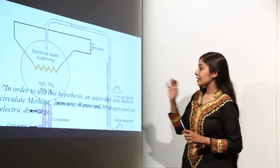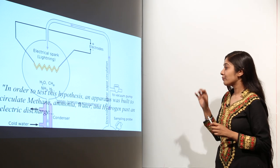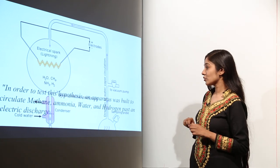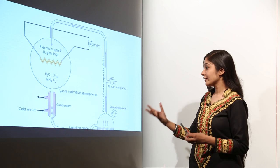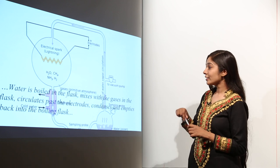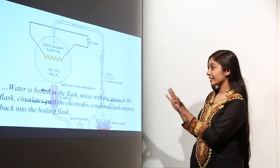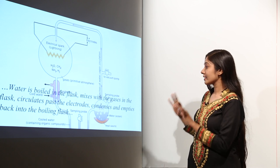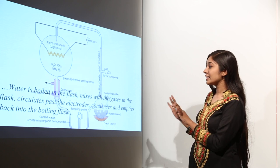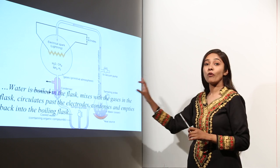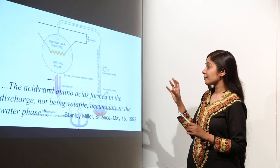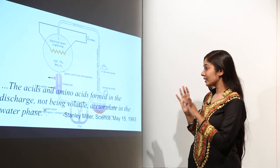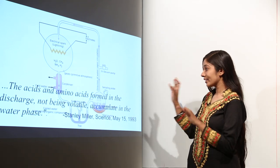In order to test this hypothesis, an apparatus was built to circulate methane, ammonia, water, and hydrogen past an electric discharge. Water is boiled in the flask, mixed with the gases, circulates past the electrodes, condenses, and empties back into the boiling flask. The acids and amino acids formed in the discharge, not being volatile, accumulate in the water phase.